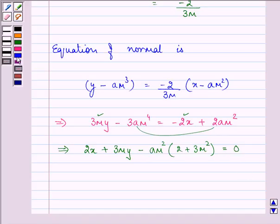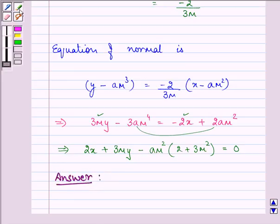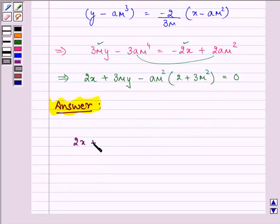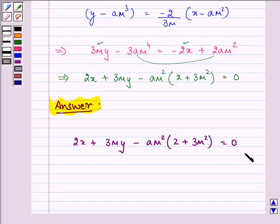This is the answer for the question which is given to us. Let me rewrite it for you. It is 2x plus 3my minus am²(2 plus 3m²) equal to 0. This is the equation of the normal at the points (am², am³) for the curve ay² = x³.